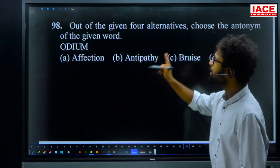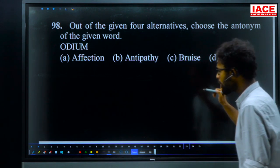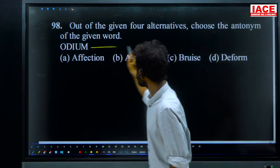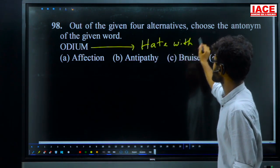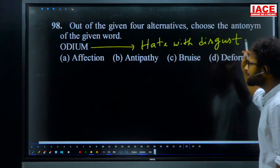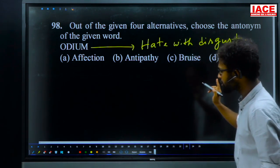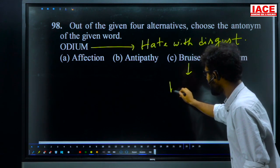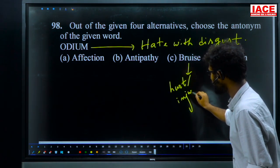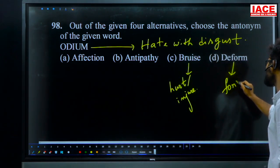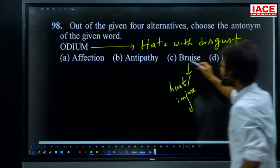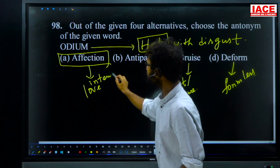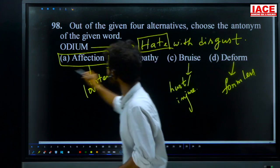Question 98: antonym of 'odium.' 'Odium' means to hate someone with extreme disgust. Options: affection, antipathy, brewish, deform. 'Affection' means love; 'antipathy' means opposite of sympathy; 'brewish' means to hurt or injure someone; 'deform' means formless or abstract. Since 'odium' means hate and 'affection' means love, they are opposites. For question 98, option A — affection — is the answer.